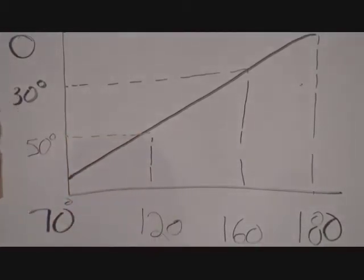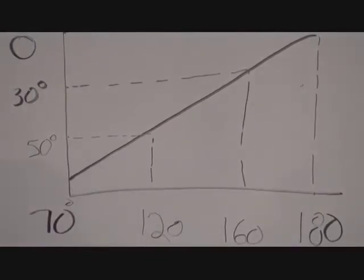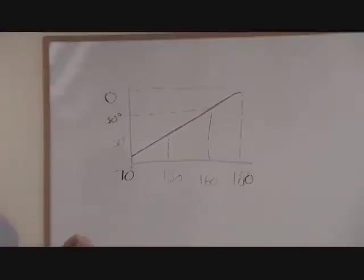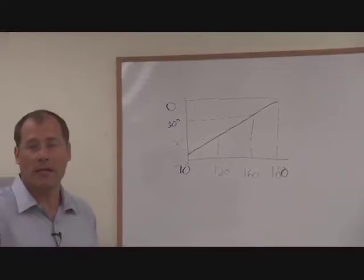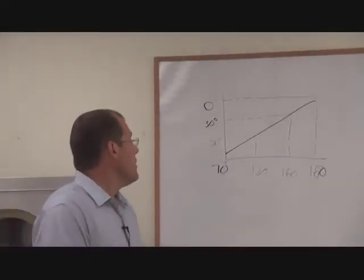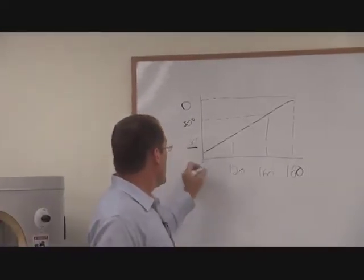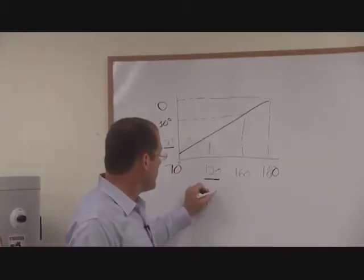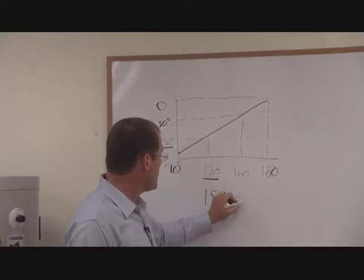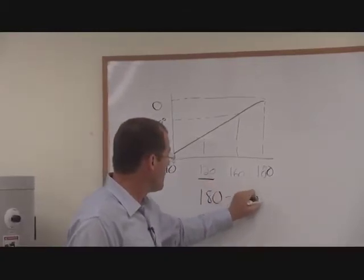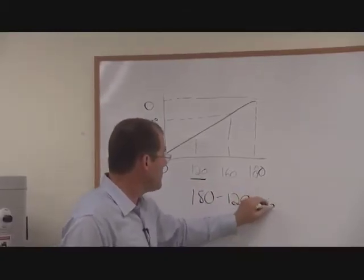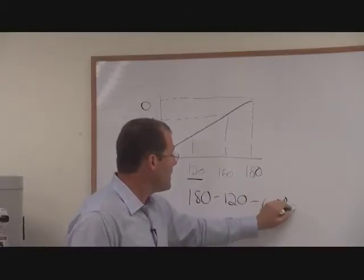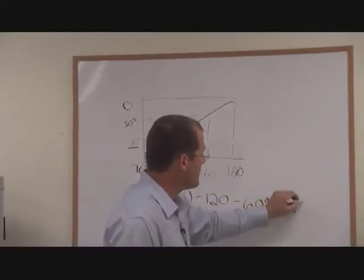Now where this efficiency comes in is every three degrees that you can lower the boiler's water temperature you gain a percent in operating efficiency. So if on this milder day we can be at 120 degrees, we have saved 60 degrees of temperature and that equals 20 percent operating efficiency gain.